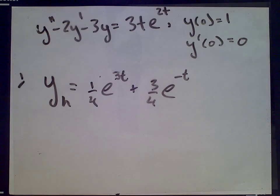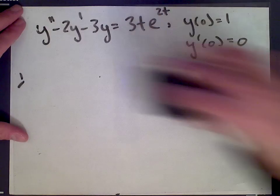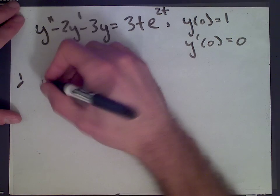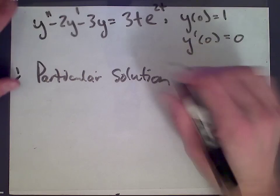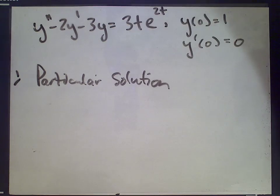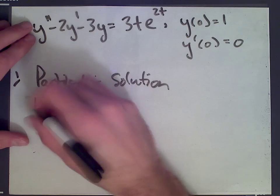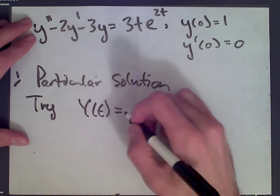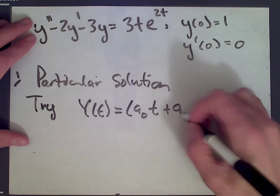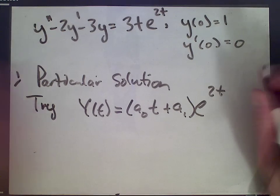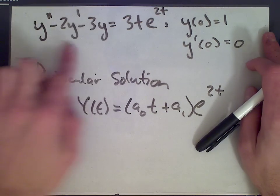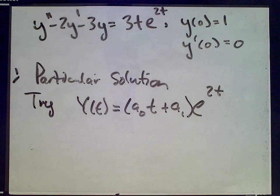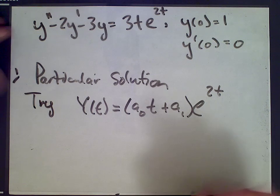Now we need to find a particular solution. The particular solution we're going to guess has the following form. We have a polynomial 3t times e to the 2t, so we guess y of t equals a0t plus a1 times e to the 2t. We know we need a factor of e to the 2t, and we have a polynomial, so these derivatives need to add up to a polynomial times e to the 2t. Sometimes this procedure involves guessing and checking, but this looks like the right form.